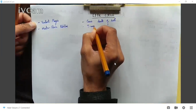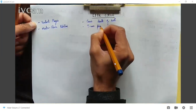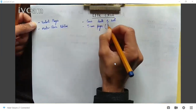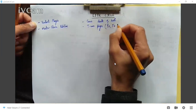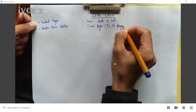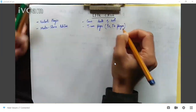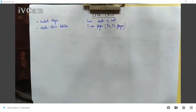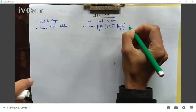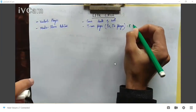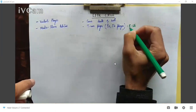The phages that perform the lytic cycle include T1, T2, and T4 phages — these are the examples we have given. These phages infect Escherichia coli bacteria. Now, these phages follow specific steps, and the first step is the same in all cycles, whether lytic or lysogenic.